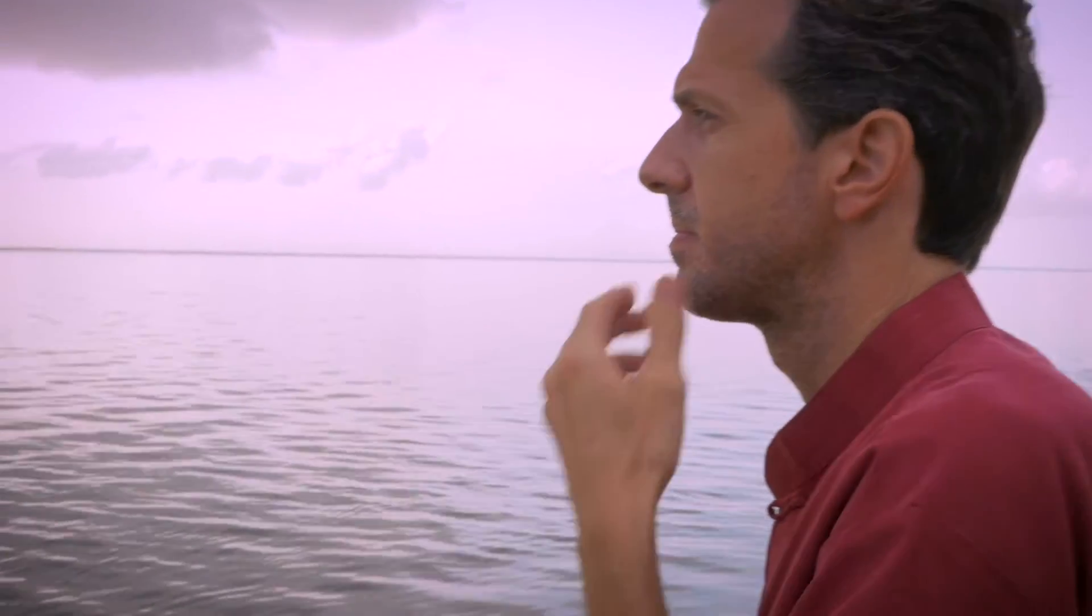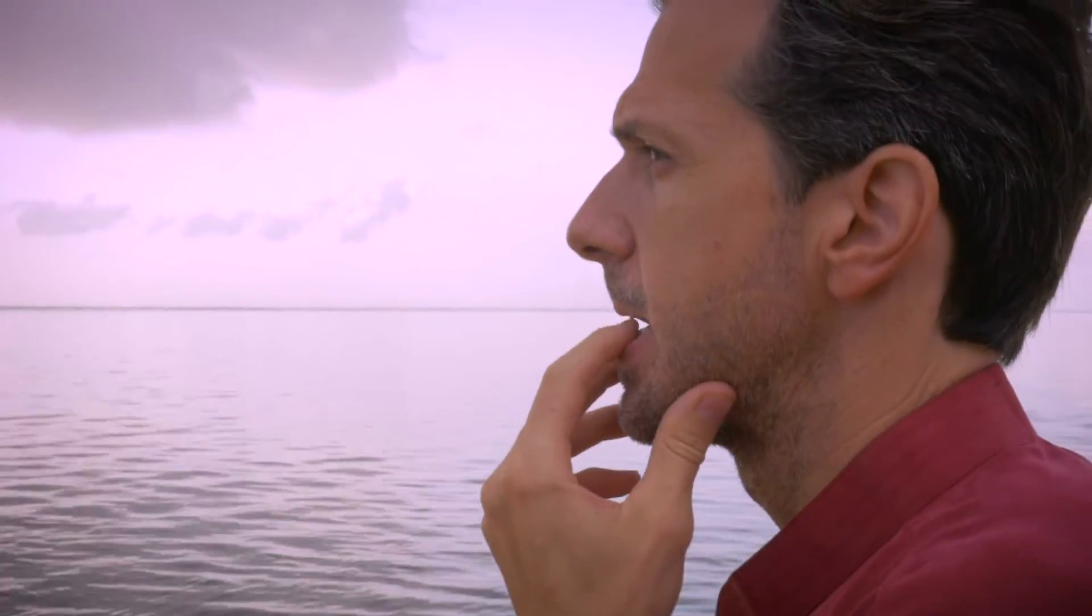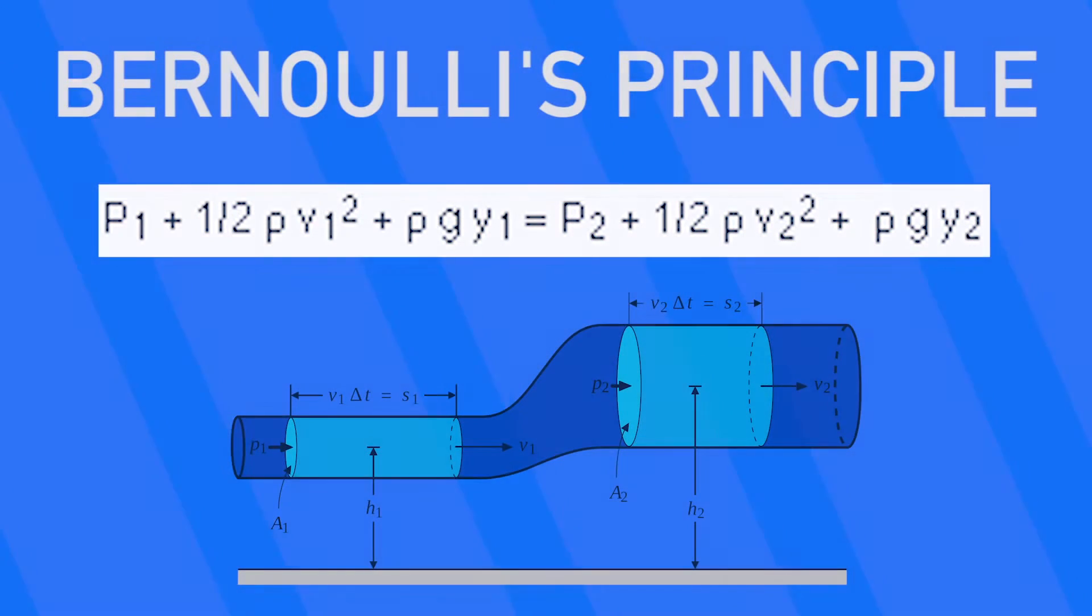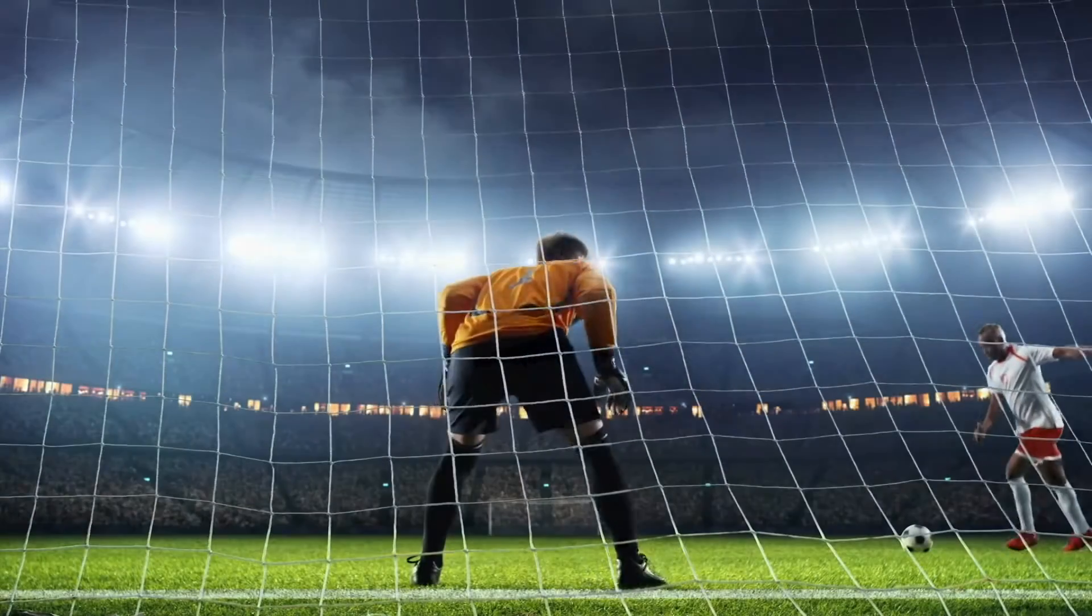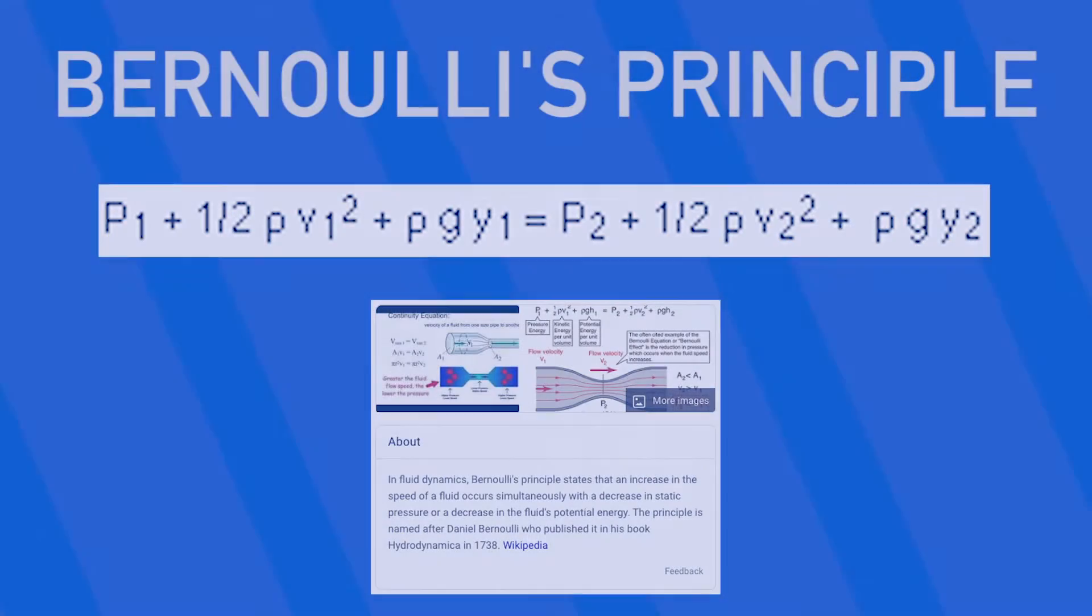So, how can we model this flow through a pipe? We can use something called Bernoulli's equation, which relates pressures, velocities, and height of fluid in a pipe. Bernoulli's equation is everywhere in fluid mechanics, and it's probably the most important equation in this line of physics. It comes into play in airplanes, sports, and of course, in plumbing pipes. So, what is Bernoulli's equation?